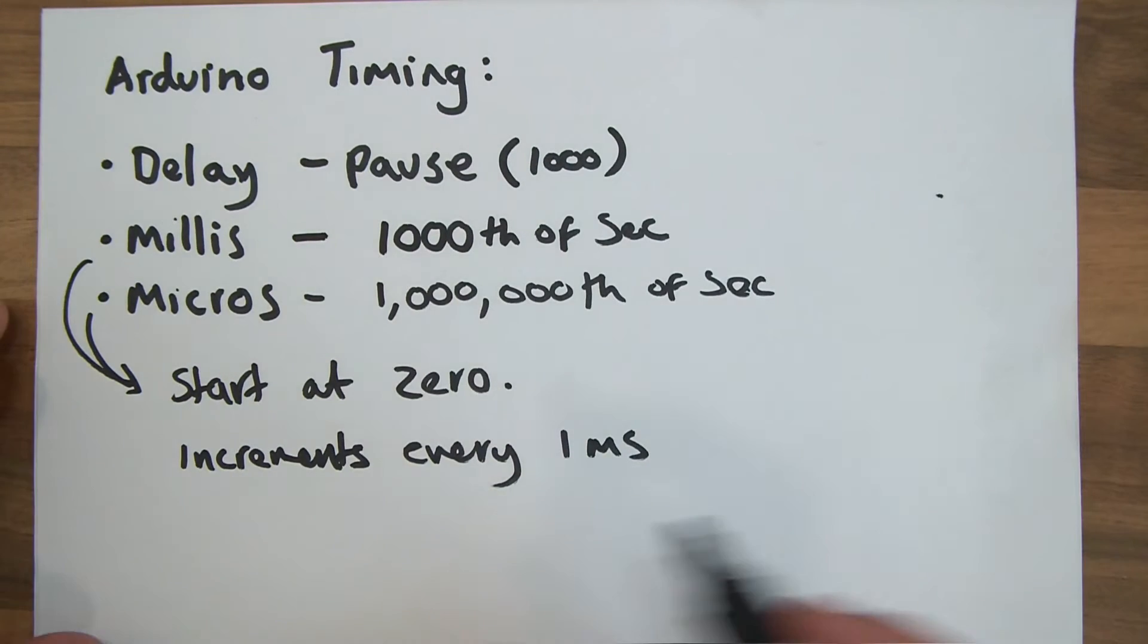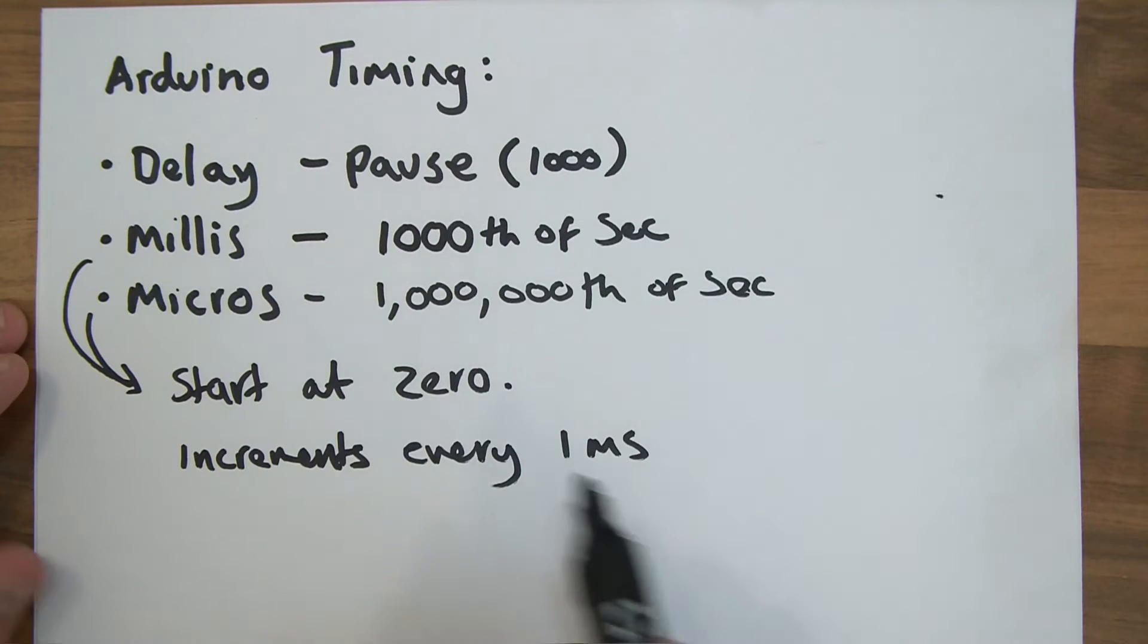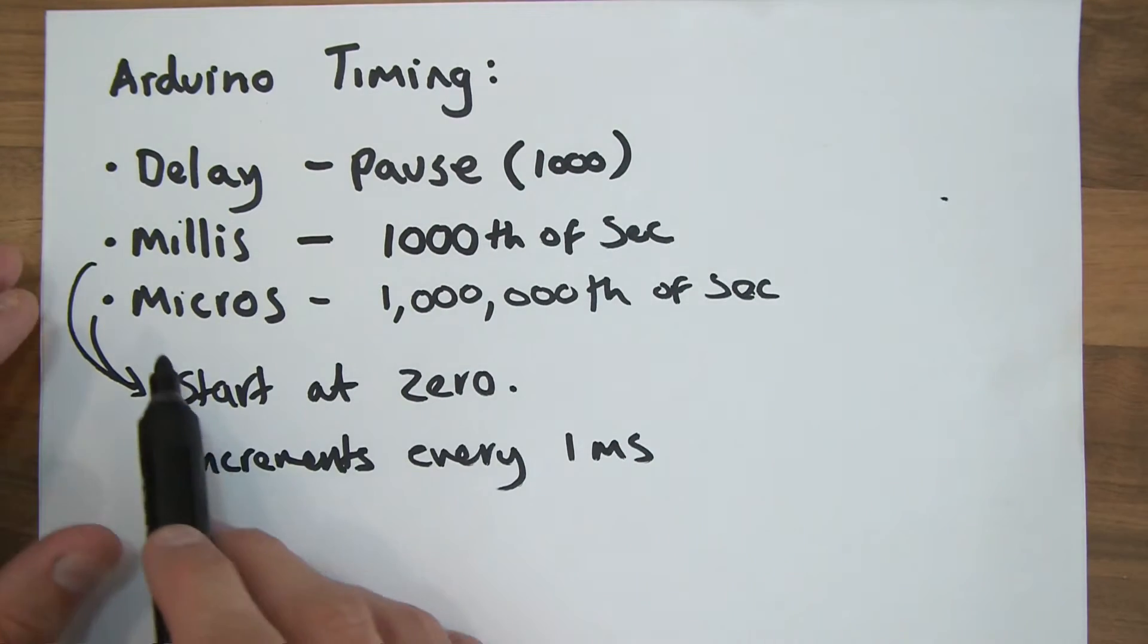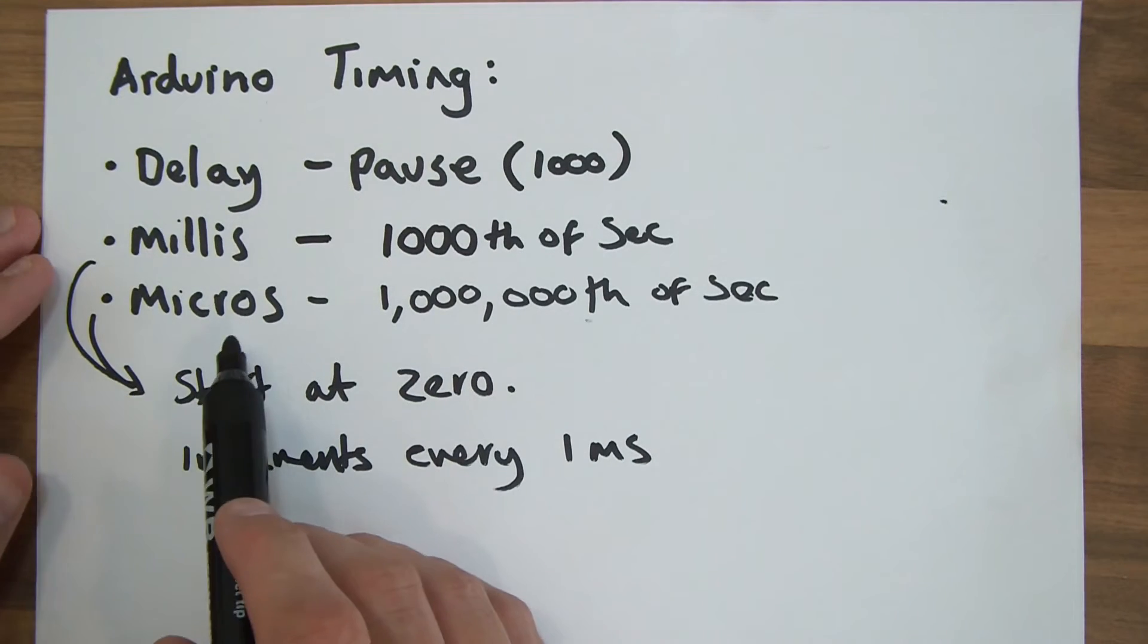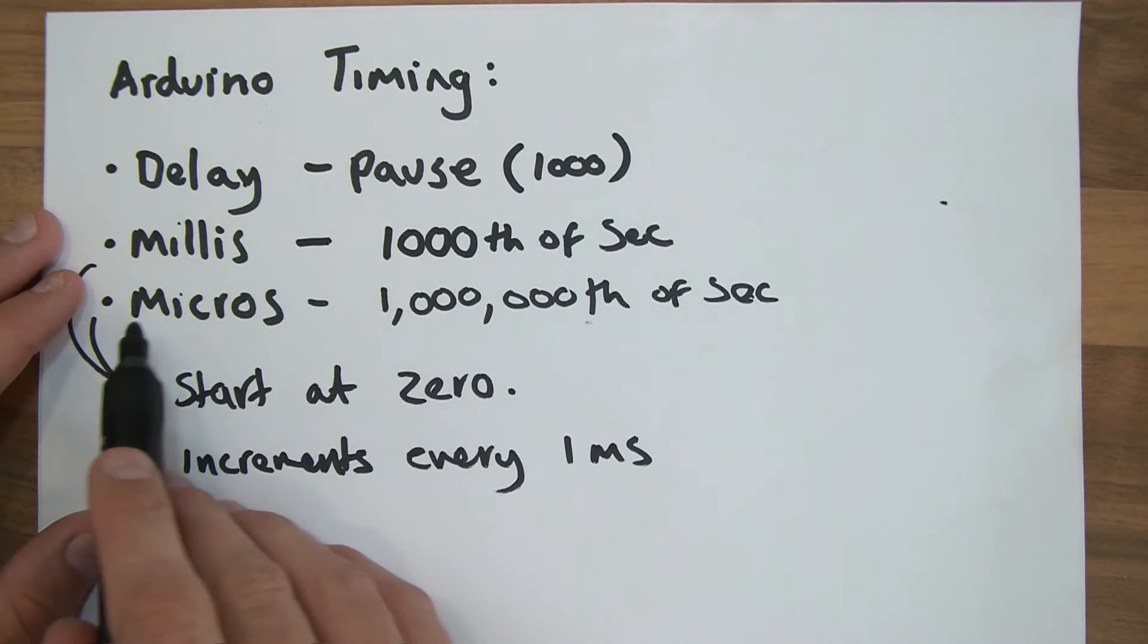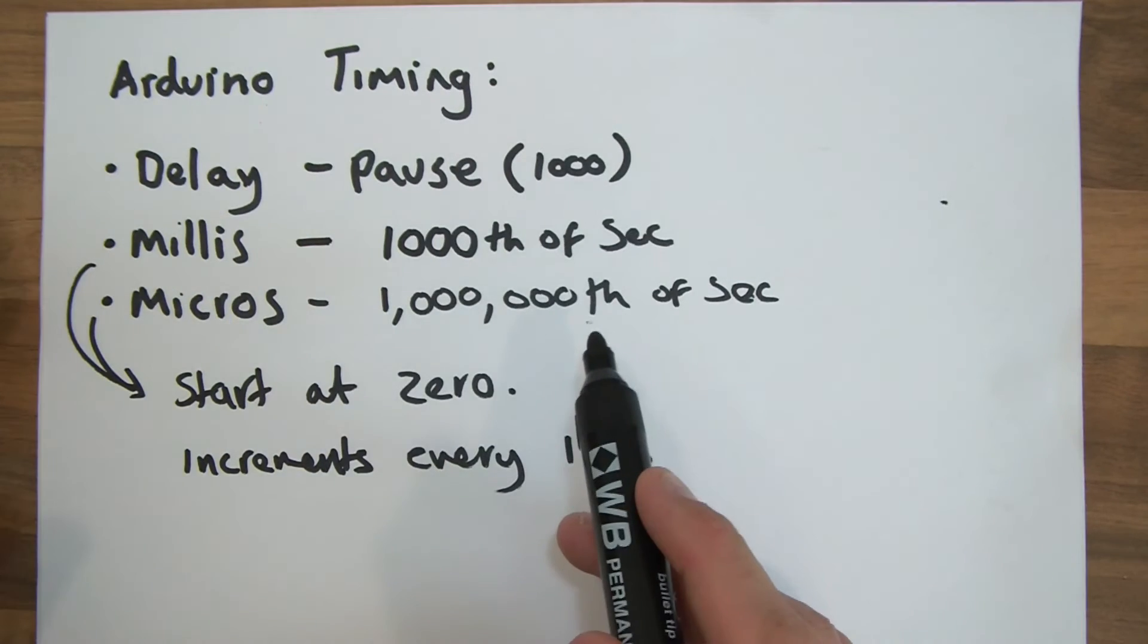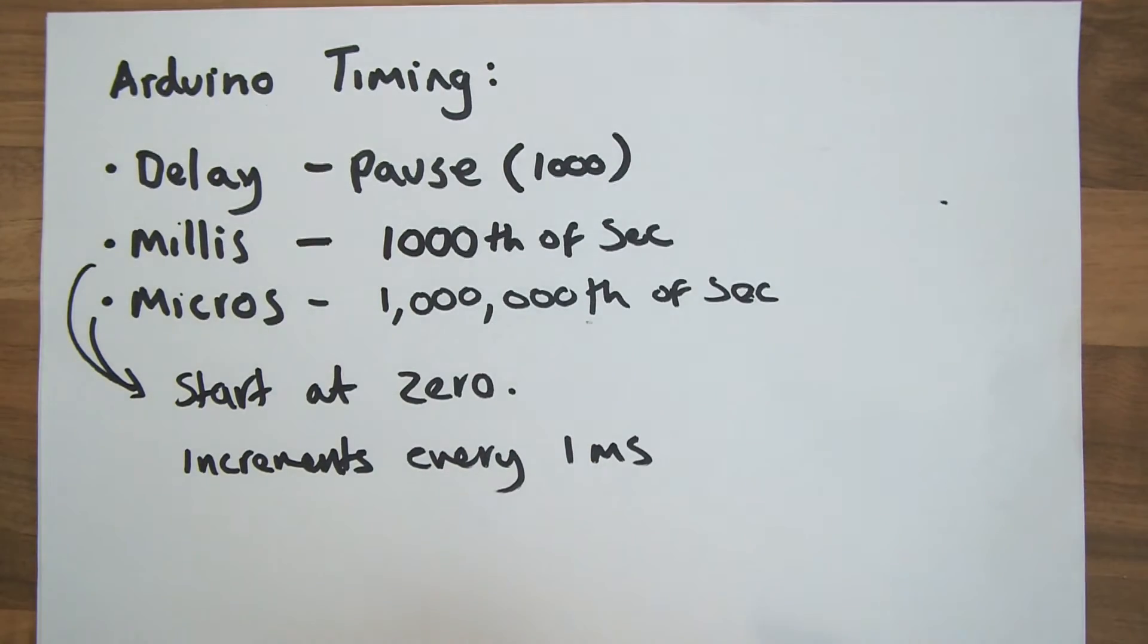And if you were to poll this millis function five seconds after the Arduino has been turned on, it would return 5000 milliseconds. And that's the way it works. And of course, micros is the same. So if you were to poll it 10 seconds after you've turned it on, this micros function, it would return 10 million because there's 10 million microseconds past since the time the Arduino was powered on. And that's how it works.